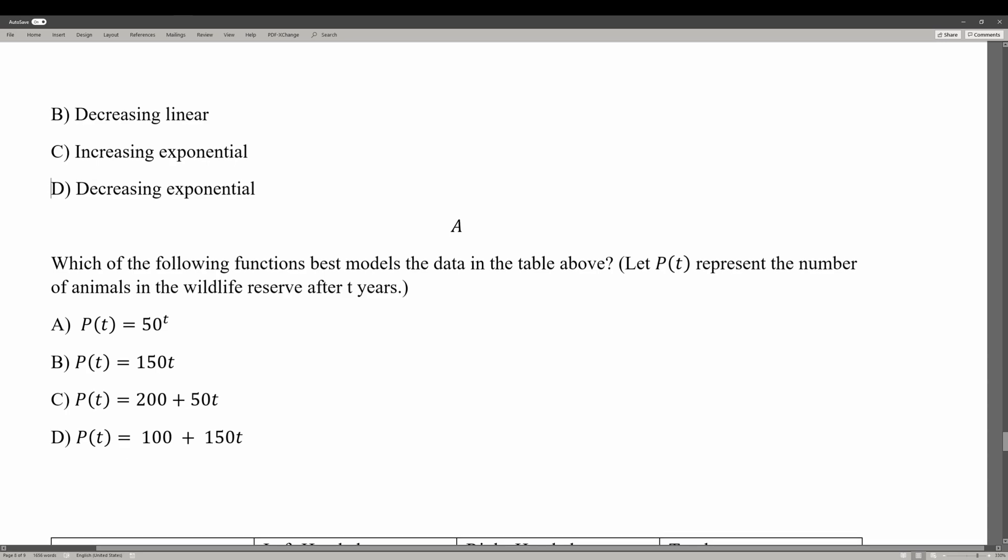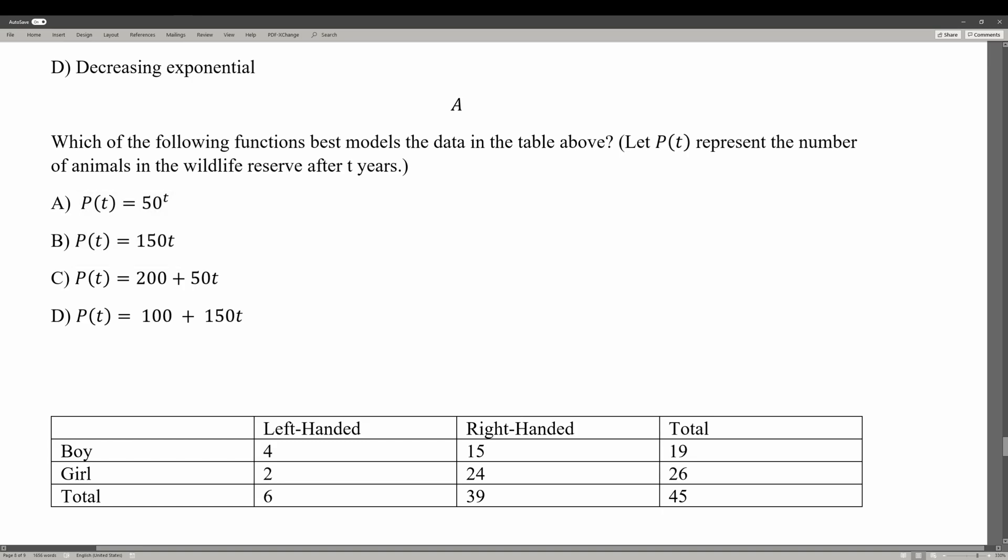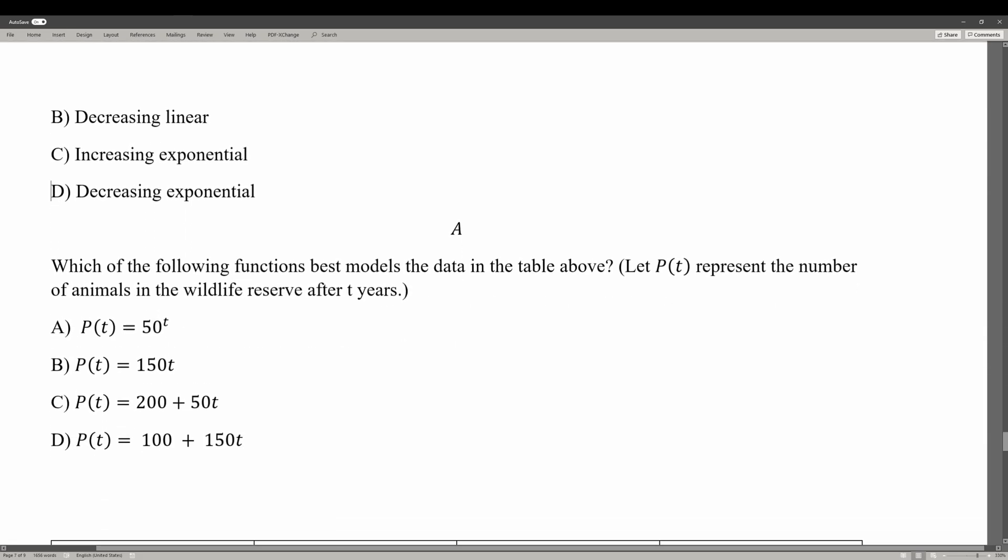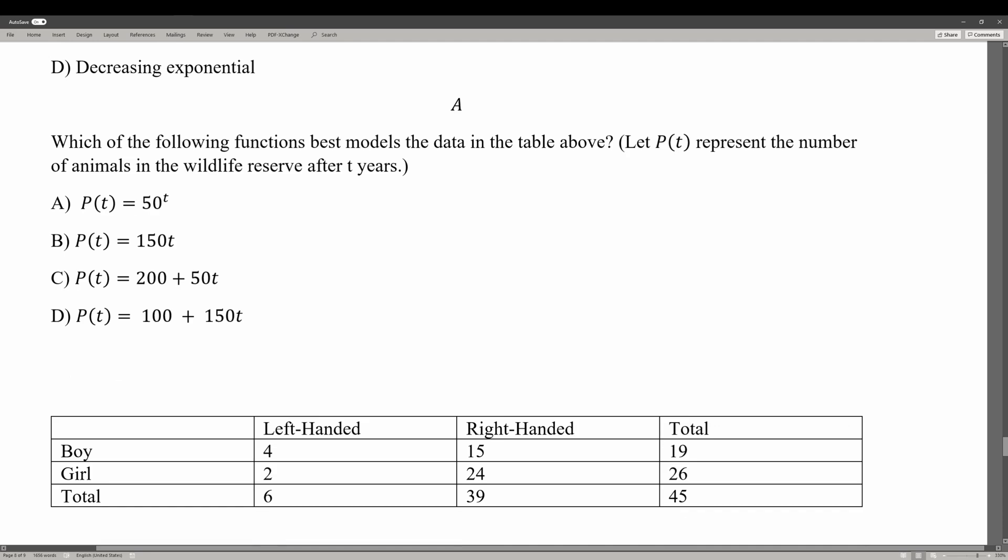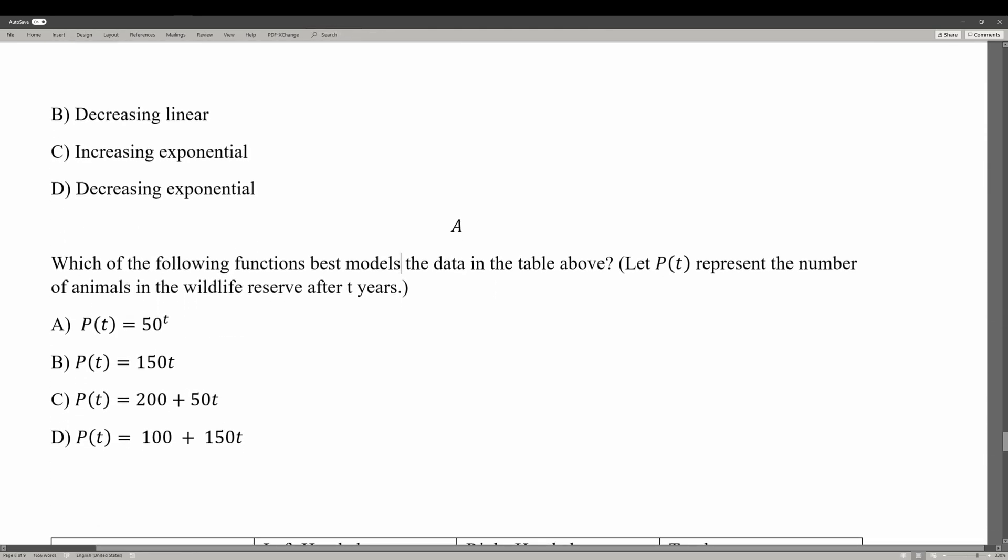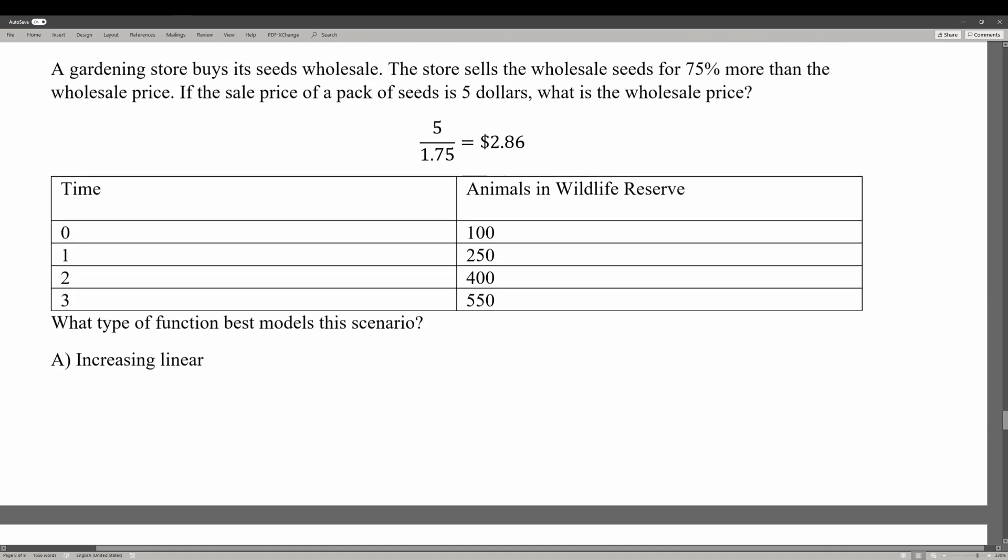Which of the following functions best models the data in the table above? Let p of t represent the number of animals in the wildlife reserve after t years. Choice A is incorrect because that is an exponential function. Choice B is also incorrect because we start off with 100, so if we put t equals 0, we should get 100. Choice C is also incorrect because if time was 0, then we don't start off with 200 animals, we start off with 100 animals. So lastly we're left with D.